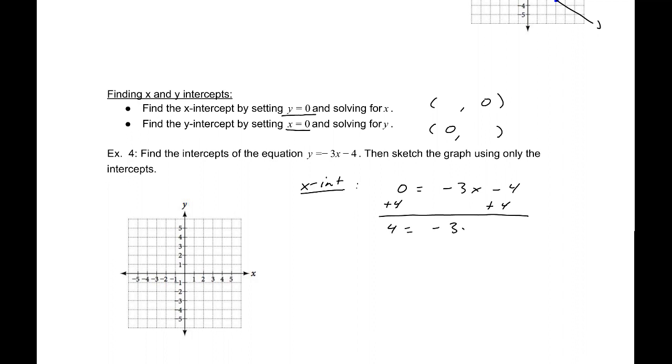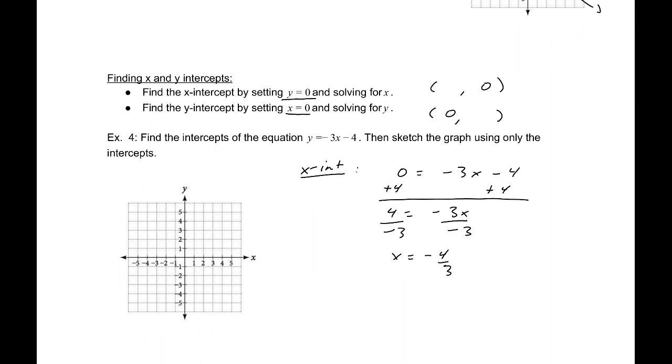Adding 4 to both sides. 4 = -3x. Dividing by -3. x = -4/3. So the x is 4/3 to the left. So we'll have that point there.